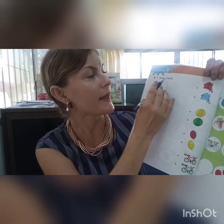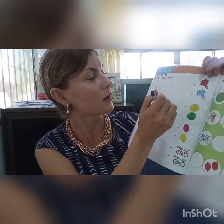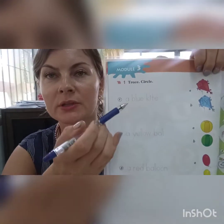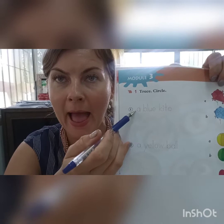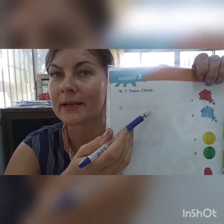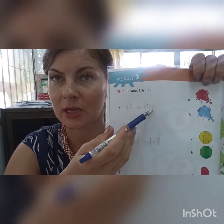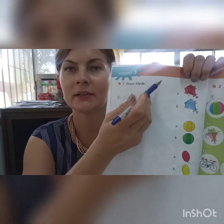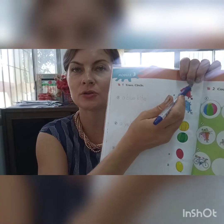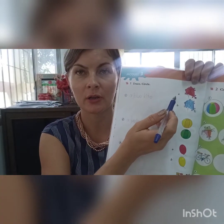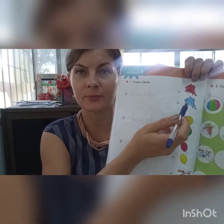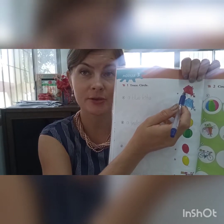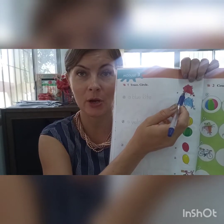And then circle. Do you see what's this? A blue kite. A blue kite. And then you need to circle — where is the blue kite? Is it a blue kite? No, it's not. Is it a blue kite? Yes, it is. Circle the blue kite.